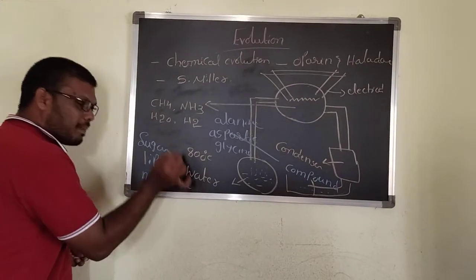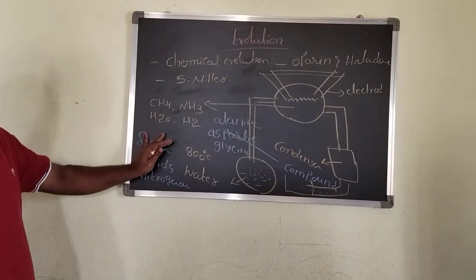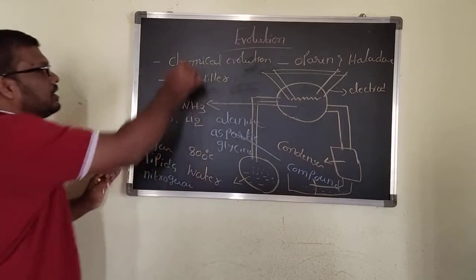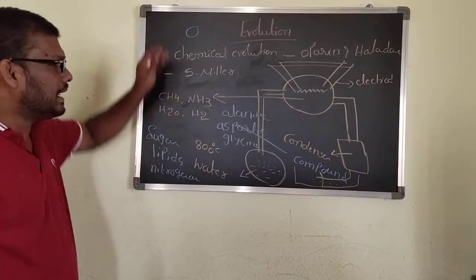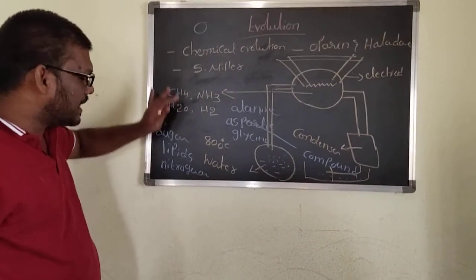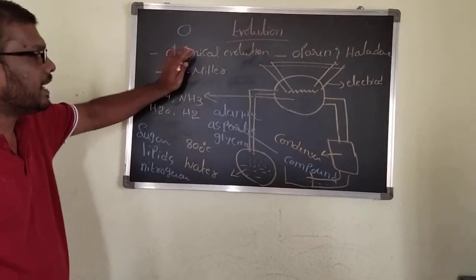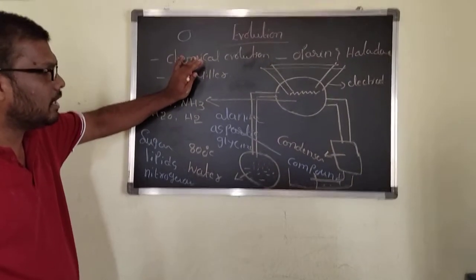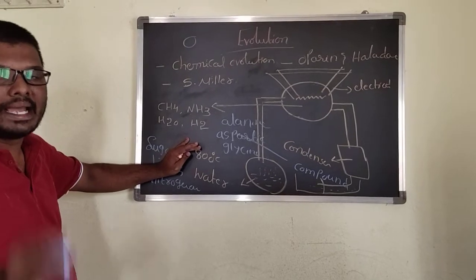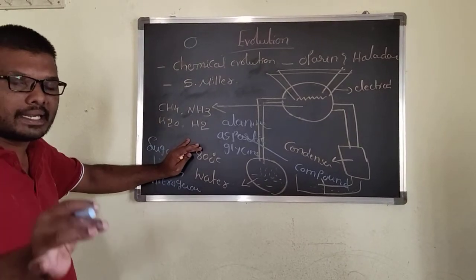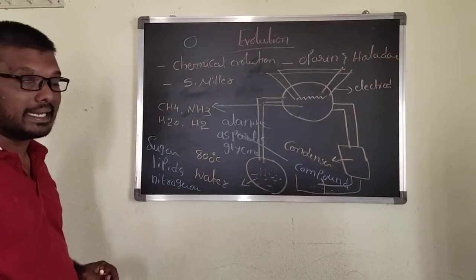Based upon this experiment, it is 100% approved that the first life originated from chemicals. That is why biological evolution came from chemical evolution — experimentally proved by the Stanley Miller experiment.